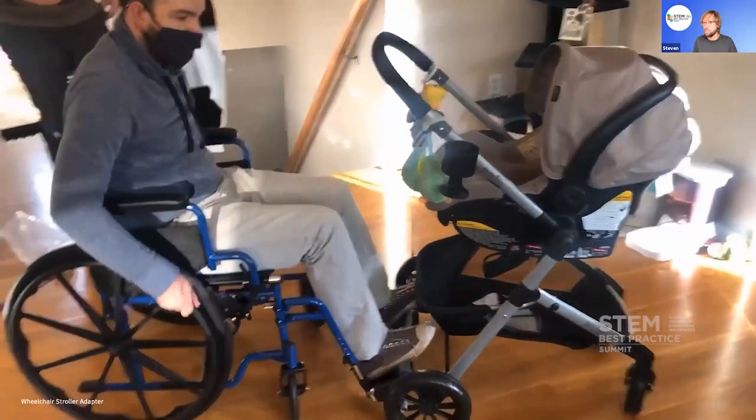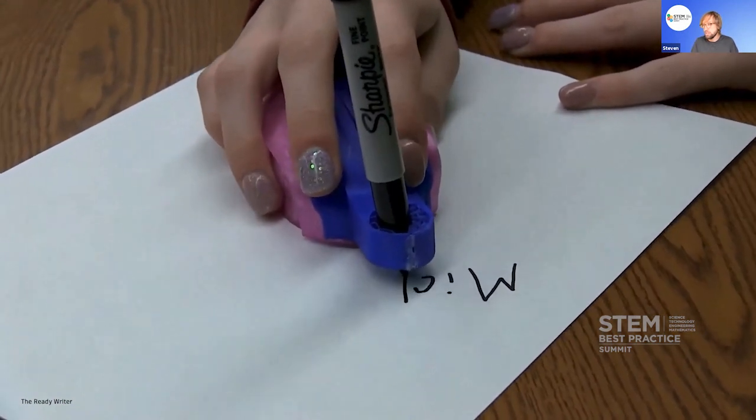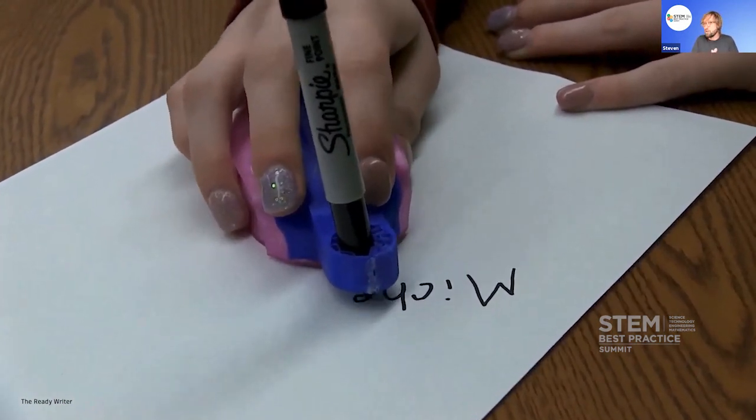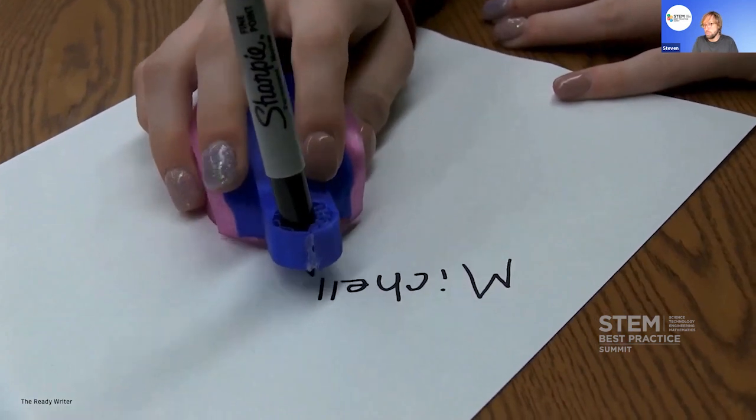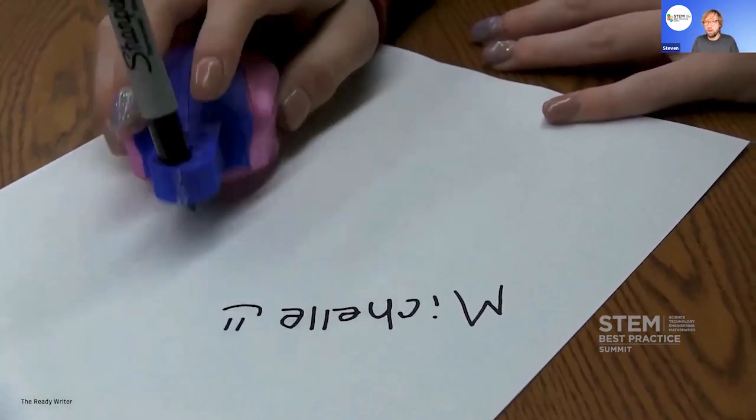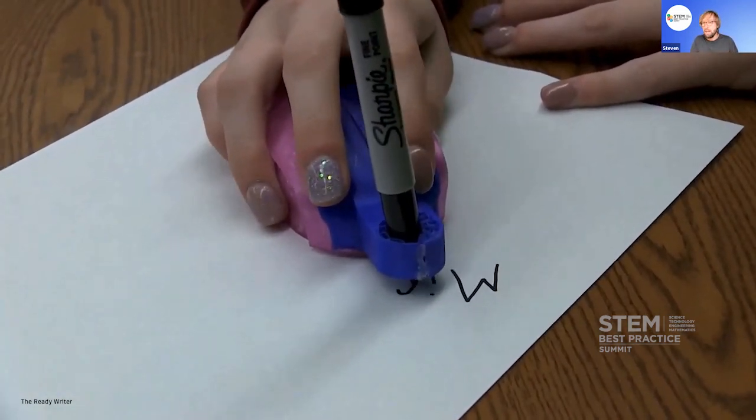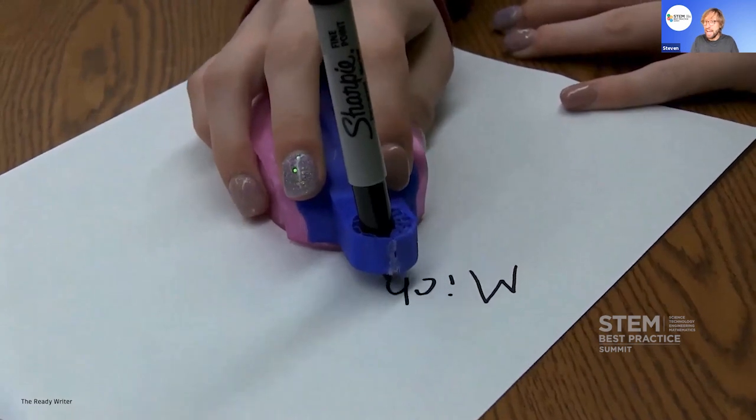This user has hypotonia and she's 12 years old. The condition causes her to become fatigued quickly due to low muscle tone. This device was created so she was able to grip a pen for longer. We all take for granted writing with a pen, but this is completely changing the life of this user just through design thinking.